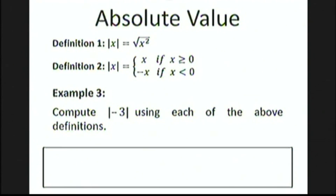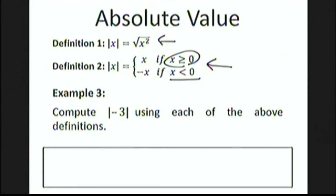I already gave you an informal definition of absolute value — just make the number non-negative. Here are a couple of equivalent, more formal mathematical definitions. The absolute value of x is the square root of x squared — you square the number and then take the square root. Another definition: the absolute value of x is just x if x is not negative, and it's the negative of x if x is negative. This last part can be confusing because in that situation, negative x is actually a positive number.